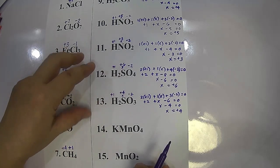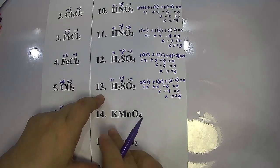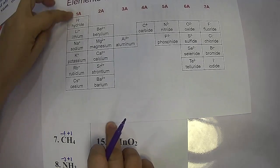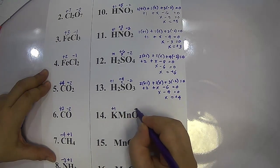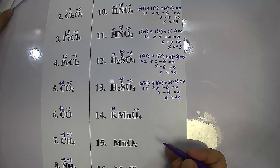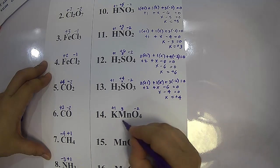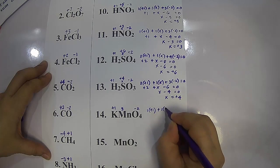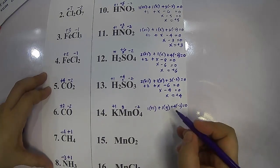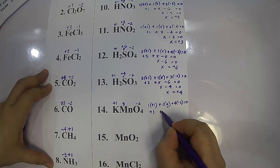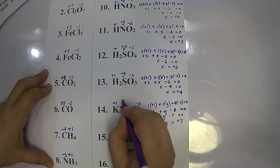For potassium permanganate (KMnO₄), potassium in family 1A is positive one, and oxygen is always negative two except in peroxides. Letting manganese equal y: one times positive one plus one times y plus four times negative two equals zero. Positive one plus y minus eight equals zero, so y minus seven equals zero, therefore y equals positive seven. Manganese in potassium permanganate is positive seven.